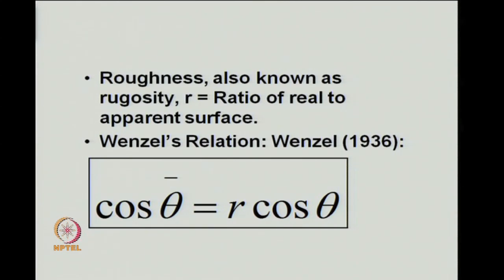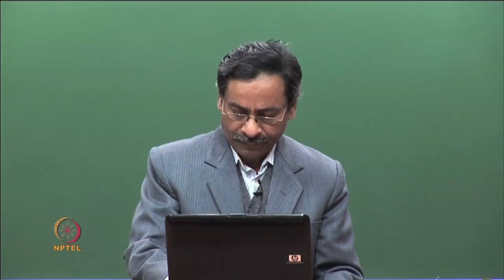The question is: what would be the contact angle for the same liquid on the same solid but with a rougher surface? Historically this relation was given by Wenzel in 1936. The relation is: cosine of contact angle for a rough surface equals the rugosity times cosine of angle for a smooth solid surface. Here, cos(θ̄) corresponds to the rough surface, θ is the contact angle for the smooth solid, and r is the rugosity — the real to apparent surface area ratio.